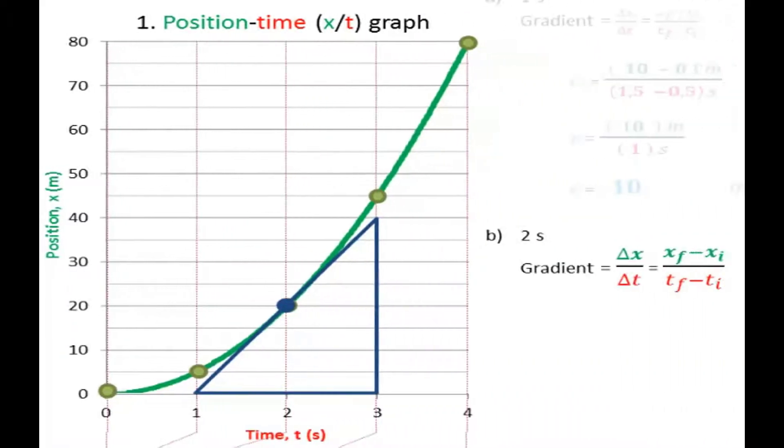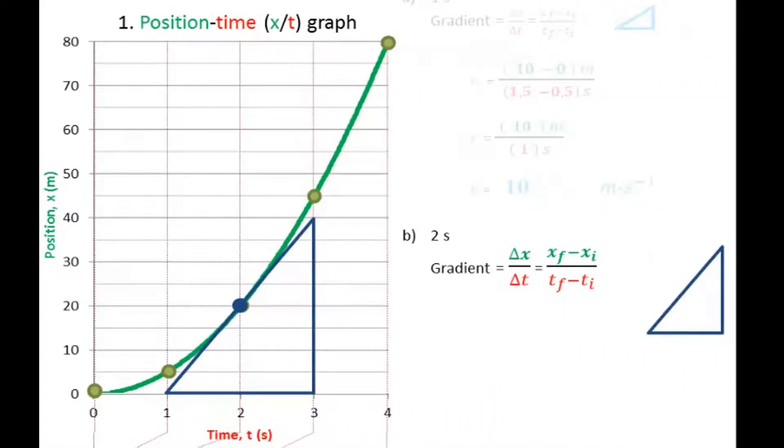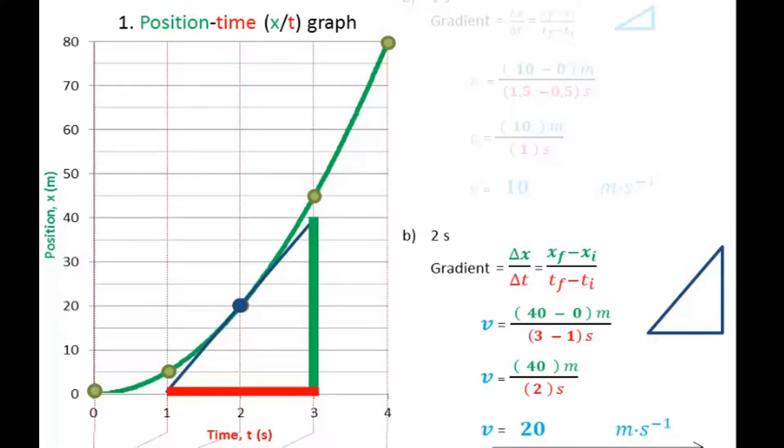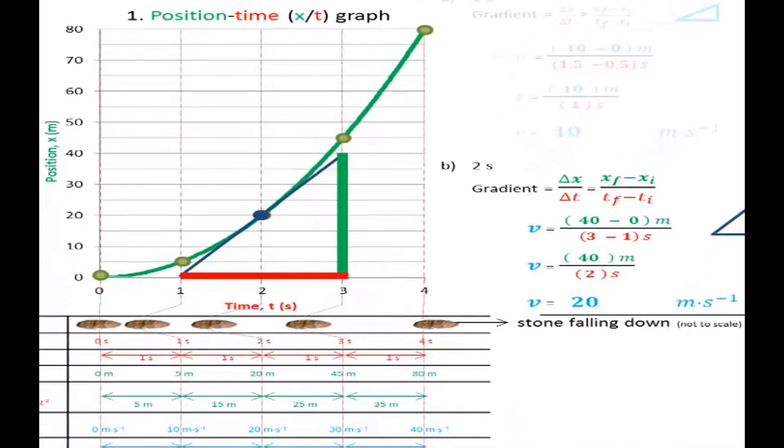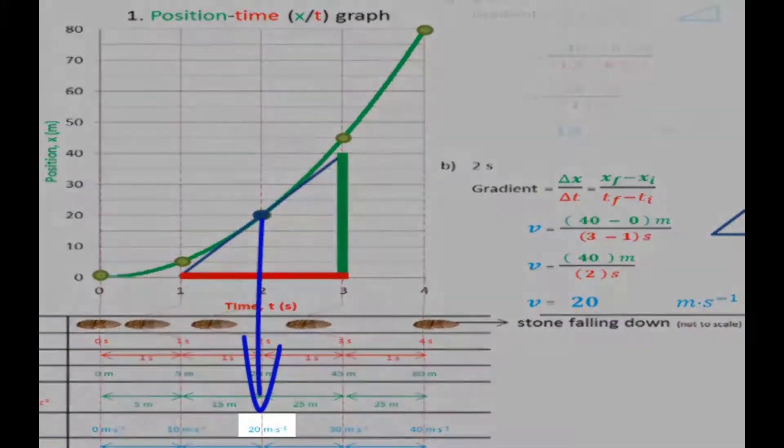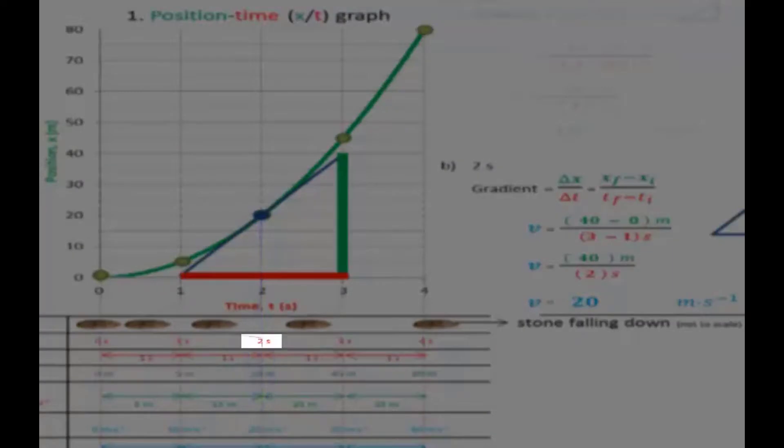So let's use this triangle. Gradient equals delta x over delta t. x-final minus x-initial divided by t-final minus t-initial. x-final is 40, x-initial 0. t-final 3, t-initial 1. 40 minus 0 meters over 3 minus 1 seconds. So the rise is 40 meters, the run is 2 seconds. 40 meters divided by 2 seconds is 20 meters per second. And indeed that is the instantaneous velocity at time equals 2 seconds.